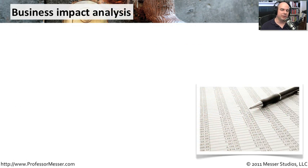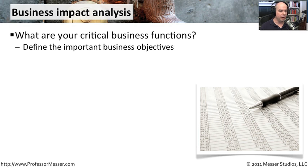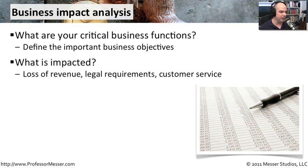To get a better handle on what that means, you should start by analyzing what would happen if certain things occur. What are the critical business functions in your environment? You need to understand what your primary business objectives are and make sure those are documented. If you're not able to produce a particular product, not able to have people in a building, or if you happen to lose a database, you need to understand how that's going to affect the overall business.